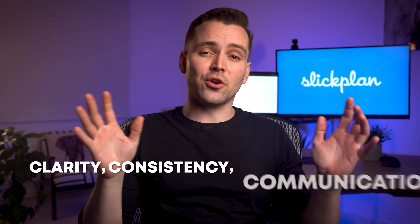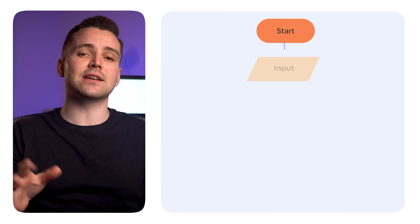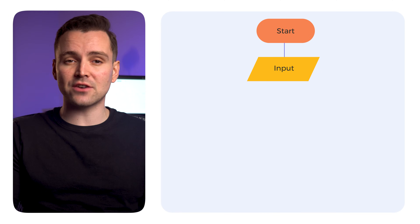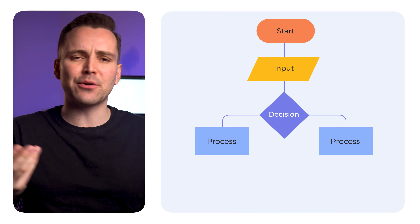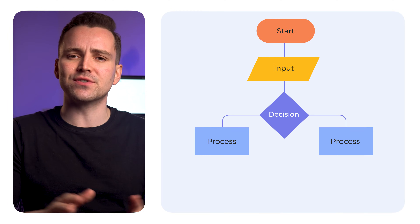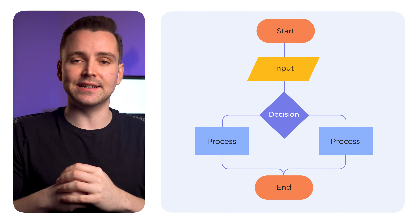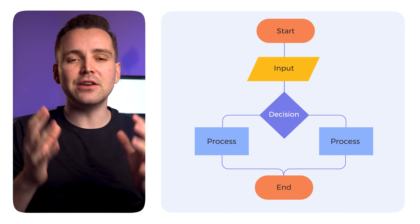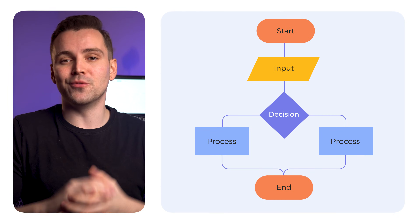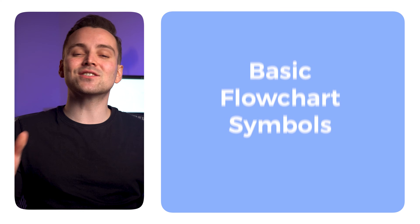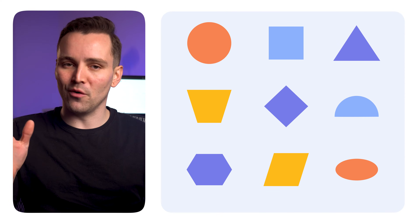Clarity, Consistency, Communication. An effective flowchart clearly communicates the sequence of actions, movements, and decisions within a system to provide a detailed overview of a process. The way to do that consistently and create broad understanding is by using industry standard symbols and connectors — the language of a flowchart. Let's dive into the symbols guide and get to know the building blocks of visualization.